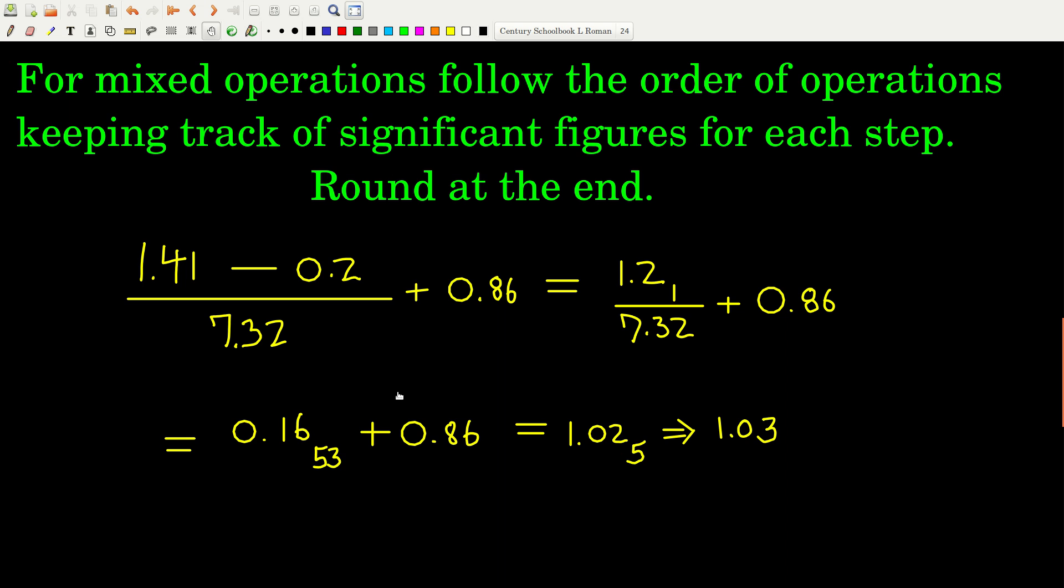Next, and remember, I noticed I didn't round yet. Next, we're going to do the last step, which is the addition, and because we're adding, once more we look at where the last significant figure is. Well, here it's 2 to the right of the decimal, the 6, right? And here it's 2 to the right of the decimal, this 6 right here. So that means we get to keep 2 to the right of the decimal, and that ends up being 1.02, first insignificant figure is a 5.